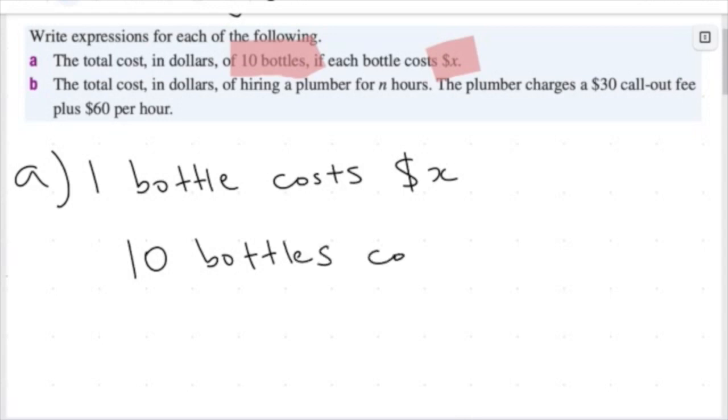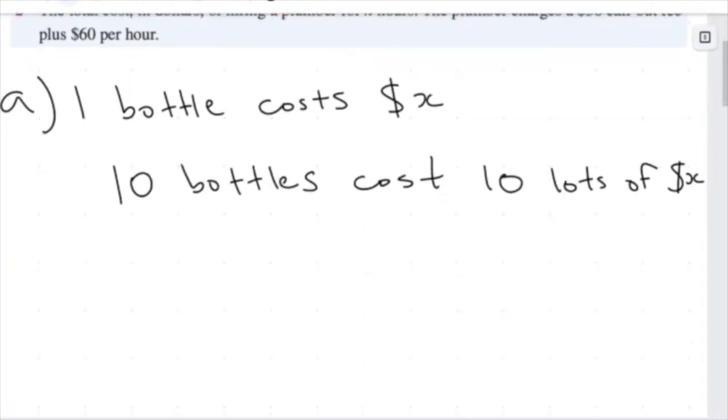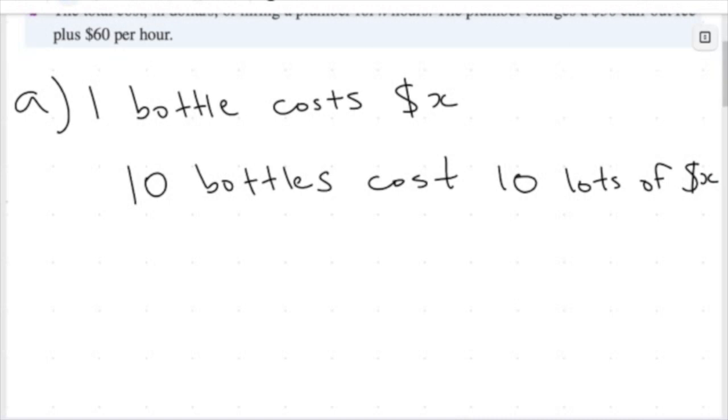If I have 10 bottles, these will cost 10 lots of x dollars. Now I'm returning to this idea we talked about in the previous video of that primary school, elementary school knowledge. If we have this piece of information, one bottle costs x dollars, taking 10 bottles, that's taking 10 lots of x dollars.